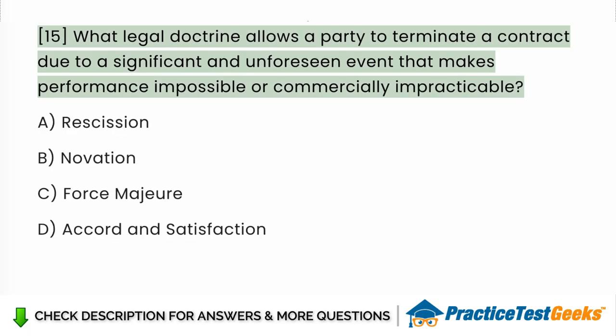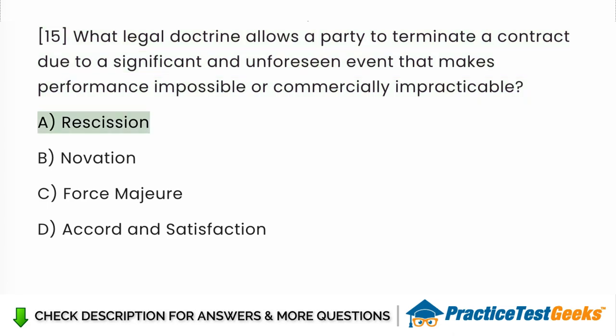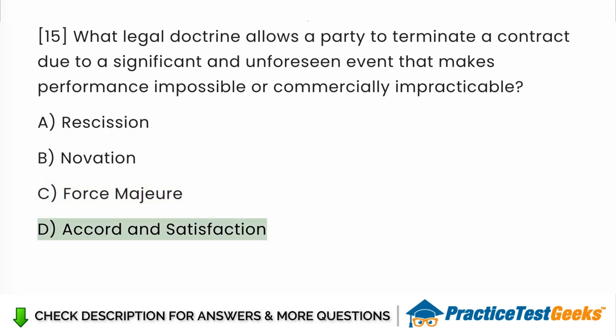What legal doctrine allows a party to terminate a contract due to a significant and unforeseen event that makes performance impossible or commercially impracticable? a. Rescission. b. Novation. c. Force majeure. d. Accord and satisfaction.